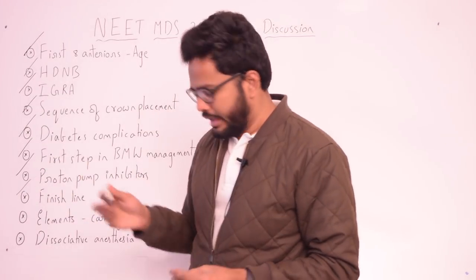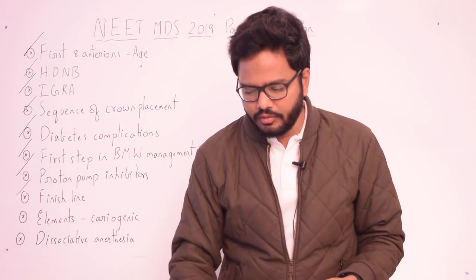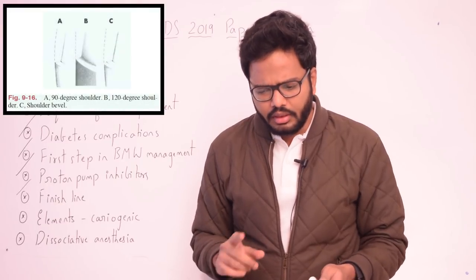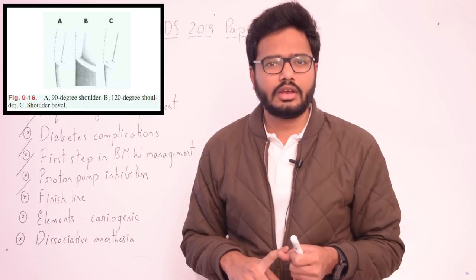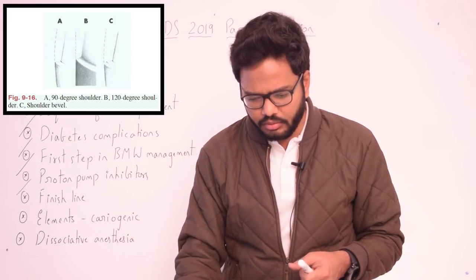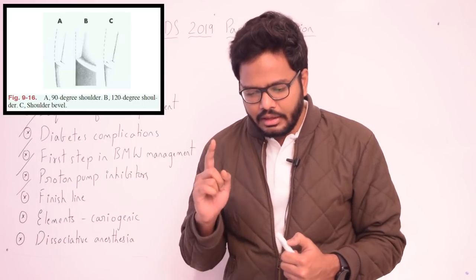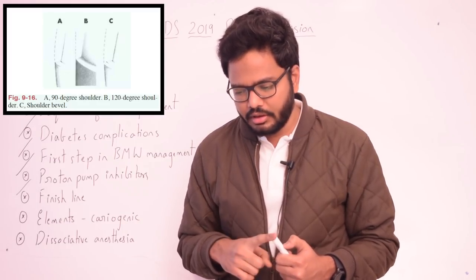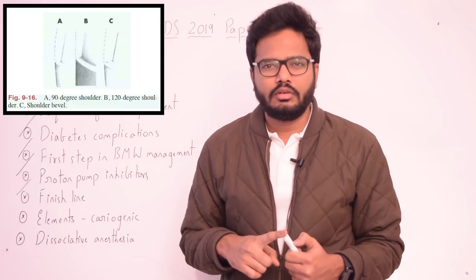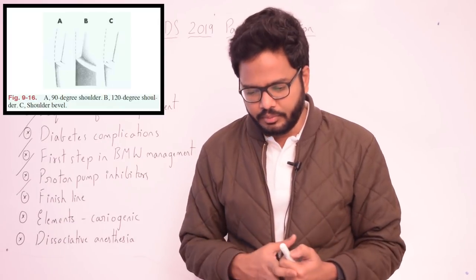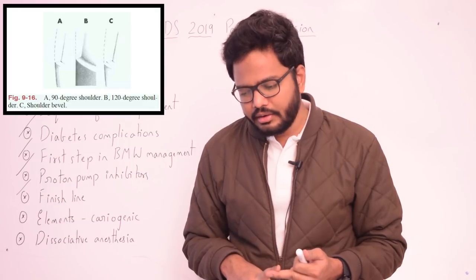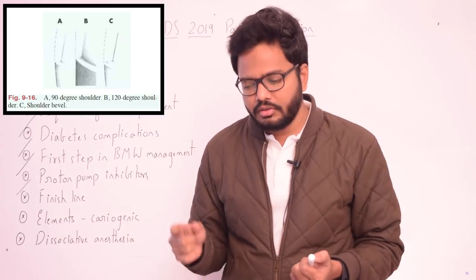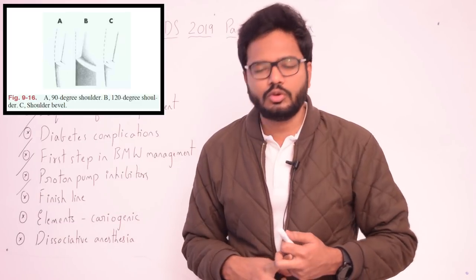Next question pertains to finish line configuration in case of metal ceramic restoration. Which finish line is preferred for metal ceramics at the gingival margin on the buccal side? Looking at the table, it's clearly given that a shoulder is indicated on the facial margin of metal ceramic crowns, whereas chamfer is used on the lingual side. A sloped shoulder is indicated in case of facial margins of metal ceramic crowns, and a shoulder with bevel is for facial margins of posterior metal ceramic crowns with supragingival margins.